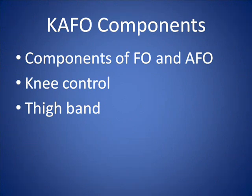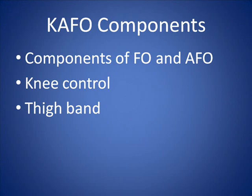Now let's look at KAFOs. A knee ankle foot orthosis can have any of the components of a foot orthosis and ankle foot orthosis, plus knee control. The orthosis is usually hinged at the knee to allow flexion. The amount of flexion and extension can be controlled by locks, varying from no motion to full motion depending on the wearer's needs. The brace can also have genu varum or genu valgum control. The thigh band keeps the proximal end in place and can even be made for weight bearing like the socket of a prosthesis.